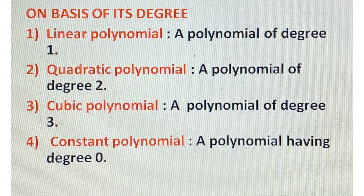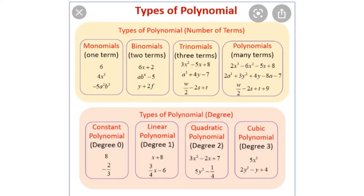Let us understand these types with examples. Monomials have one term — for example: 6, 4x³, −5a²b³. Binomials have two terms — for example: 6x + 2, ab⁴ − 5, y + 2f. Trinomials have three terms — for example: 3x² − 5x + 8, a³ + 4y − 7. Polynomials (many terms) include expressions like 2x³ − 6x² − 5x + 8 and 2a³ + 3y² + 4y − 8a.